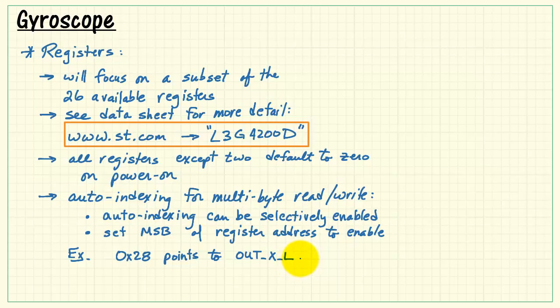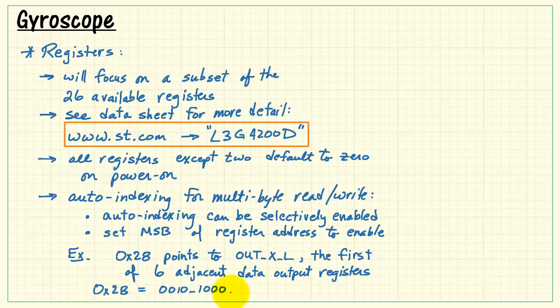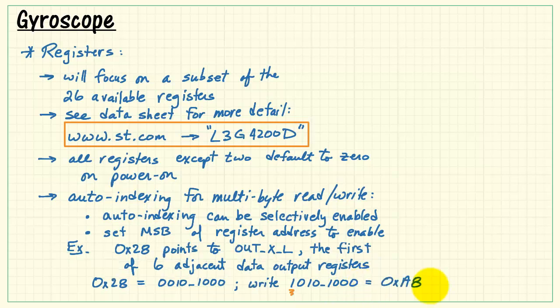For example, hexadecimal 28 points to one of the output data registers. This is the first of 6 adjacent data output registers. Hexadecimal 28 looks like this in binary. You would set the most significant bit, which in hexadecimal looks like A8.